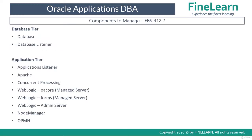We know already that in Oracle E-Business Suite it's basically a three-tier architecture wherein as an Apps DBA you'll be managing the application tier and database tier services. On the database tier it is only the Oracle database which runs along with the database listener. So whenever you want to start the database you'll be starting the database and also the database listener. These two are the only components which you have to manage on the Oracle database side of the E-Business Suite.